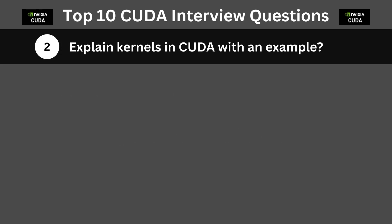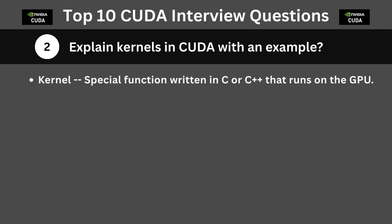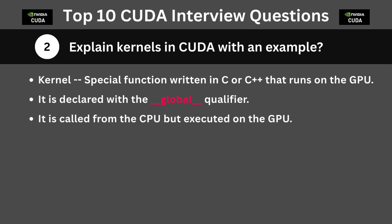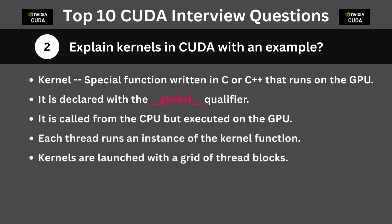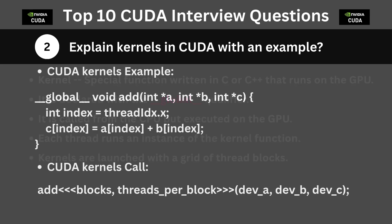The second question is: explain kernels in CUDA with an example. In CUDA, a kernel is a special function written in C or C++ that runs on the GPU and is executed in parallel by many threads. It is declared with the __global__ qualifier and is called from the CPU but executed on the GPU. Each thread runs an instance of the kernel function. Kernels are launched with a grid of thread blocks, and you, as a programmer, define how many threads and blocks to use during the kernel launch. You can give a code example of a CUDA kernel and its kernel launch syntax.